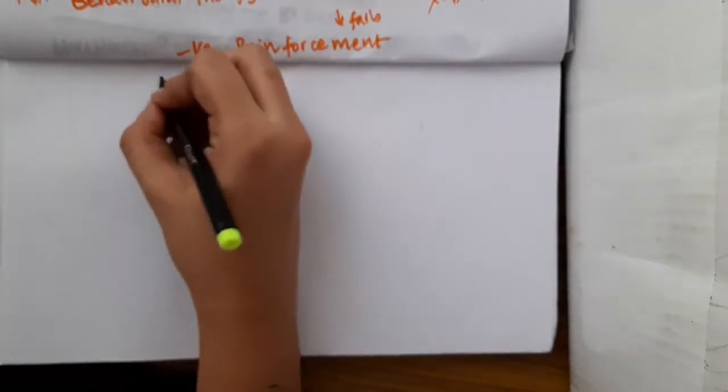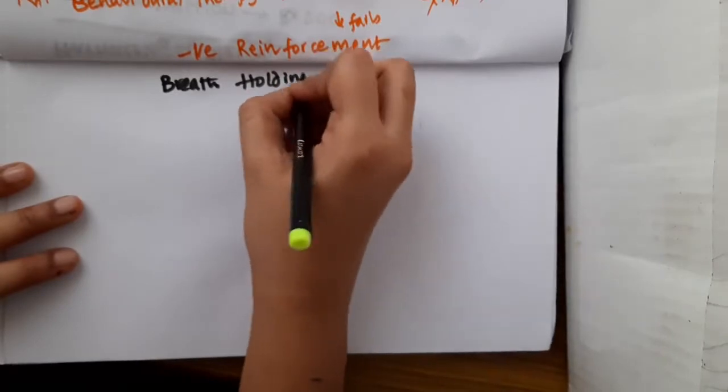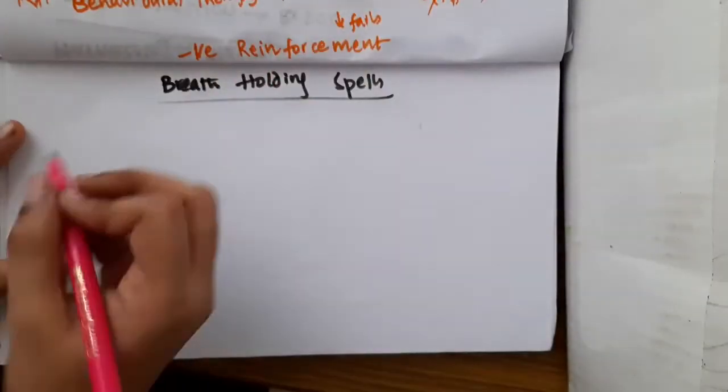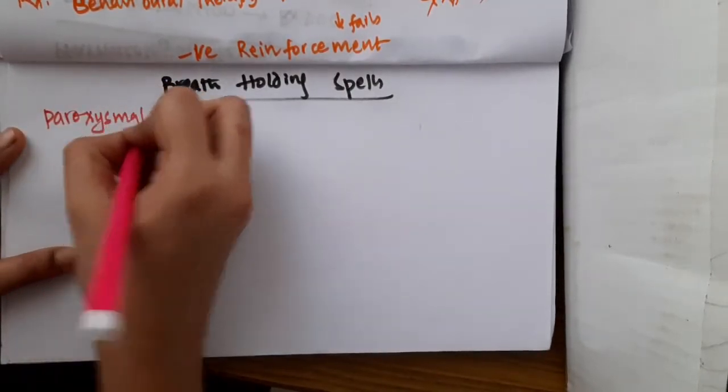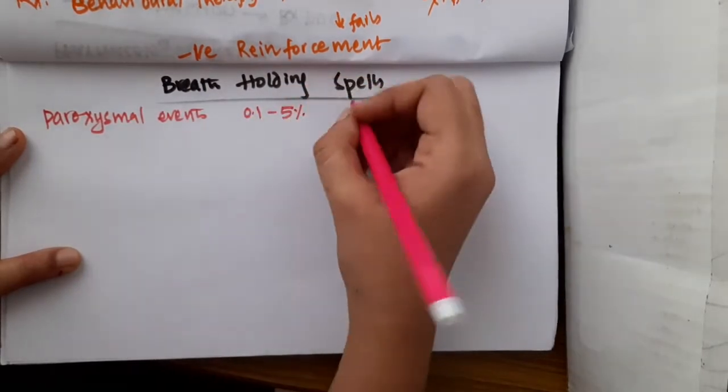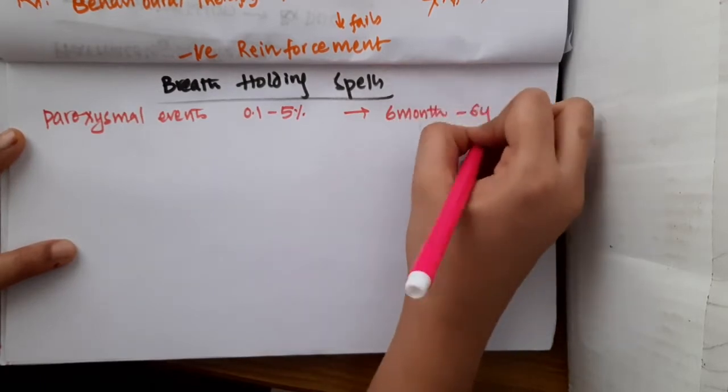Hello friends, let us now learn some important points about breath holding spells. Breath holding spells are paroxysmal events which occur in almost 0.125% of children who are in the age group of 6 months to 6 years.